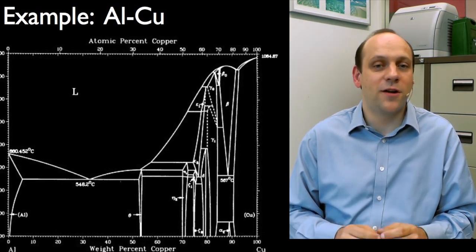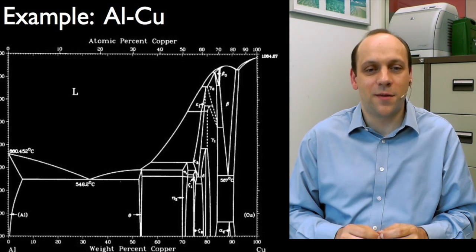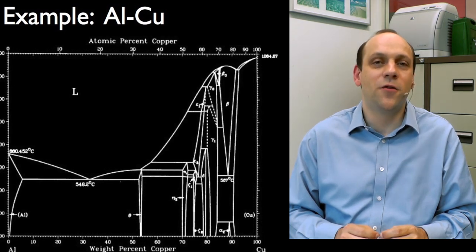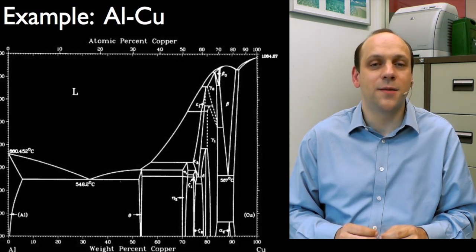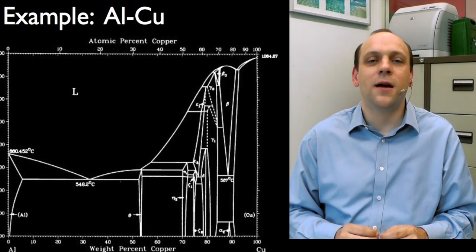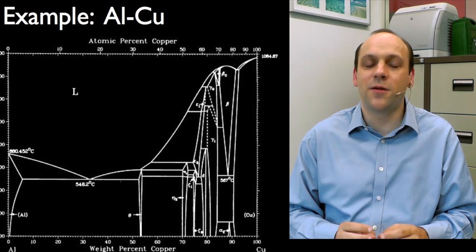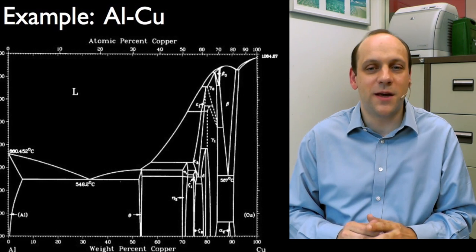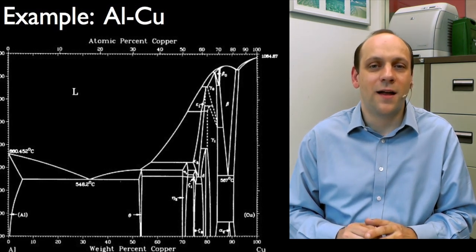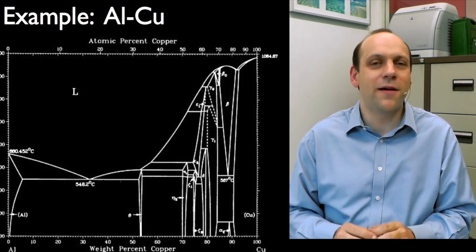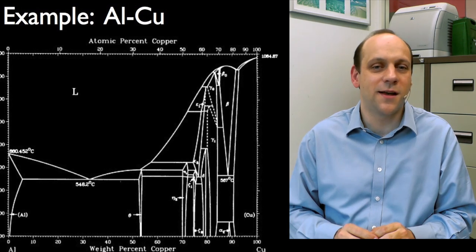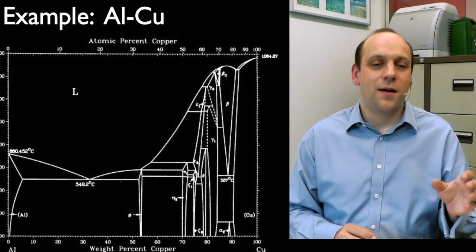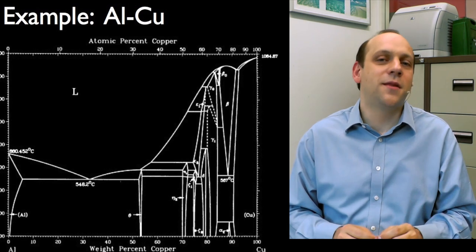And in between we have a number of intermetallics, things like theta there at something like 54 weight percent copper. Theta is nominally something like Al2Cu. You see an atomic percent is about 33 percent Al. And then there are a range of others like those etas and betas and so on all over there. And there are some rather funny things like peritectics and so on you're not going to meet till second year.